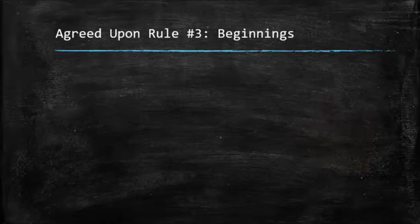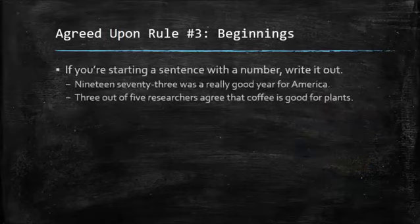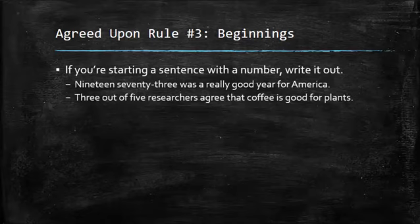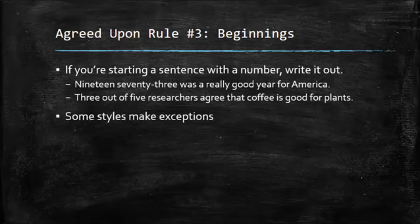The next one talks about beginnings. If you're starting a sentence with a number, you're going to write it out. So whether it's a long number like 1973 or if it's a shorter number like three out of five, you should still write those numbers out. There are some style guides that make exceptions. They say that you can start things out if you want to, but that agreed upon rule is that normally we start them out with writing the numbers out.